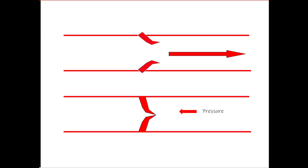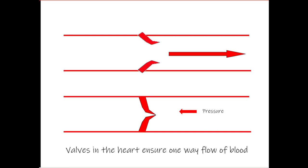Looking back at the first picture, the atrioventricular valves have tendinous-type attachments on the leaflets called chordae tendineae. You might assume the muscles those attachments connect to would contract and cause those valves to open, but that's not the case. The valves open and close because of pressure differences. The chordae tendineae function so that when the ventricle contracts and pressure builds up in the ventricular chambers, they prevent the atrioventricular valves from everting and allowing blood to flow backwards. The purpose of the valves is to ensure one-way flow of blood through the heart.